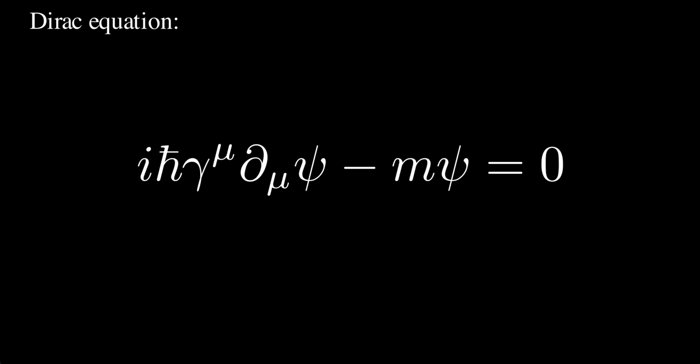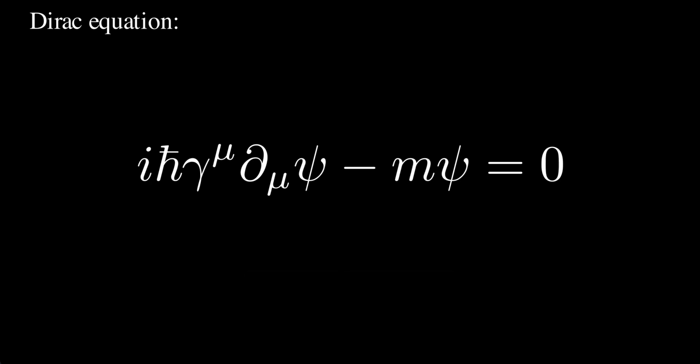Dirac had to derive an equation that was first-order in time but also relativistically invariant. We know the story — Klein-Gordon didn't achieve that, so Dirac came up with the Dirac equation, which was a genius idea because it used four-component objects and matrices — a completely different format than what was expected at the time. It's a pretty beautiful equation.